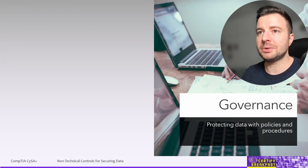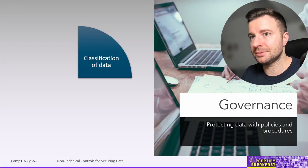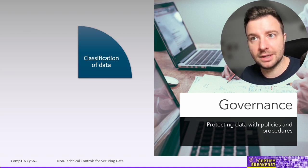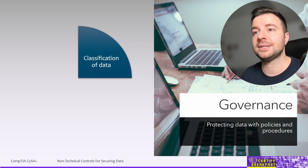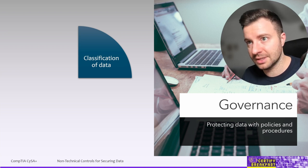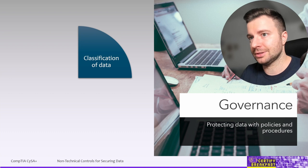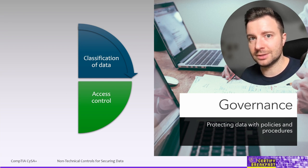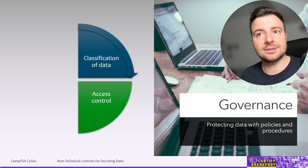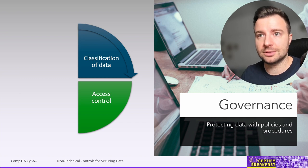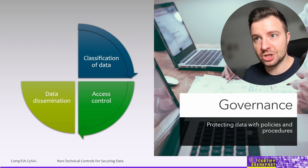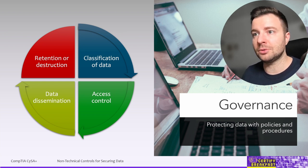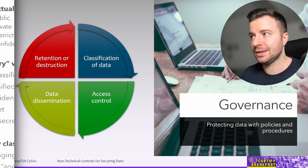When we talk about non-technical controls, we mean data governance — protecting data by having policies and procedures in place. Proper governance should be applied to the entire lifecycle of the data. The lifecycle starts with understanding the classification of data at the moment of creation or collection, then securing it when stored with proper access control and backups, then managing it when shared or distributed, and finally ensuring proper retention or destruction when it is no longer needed.